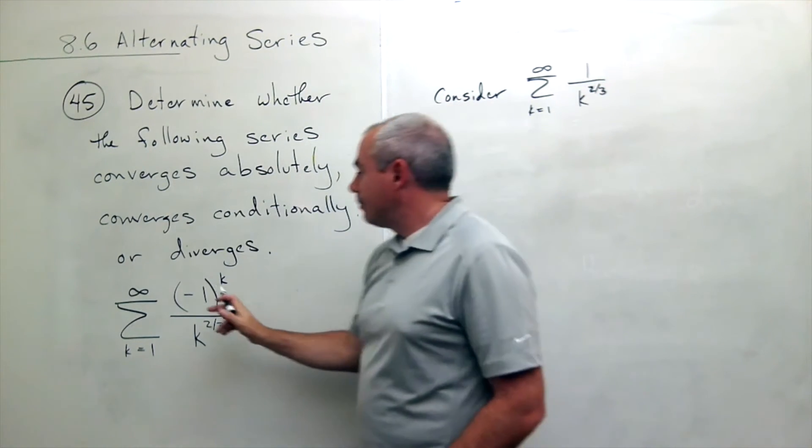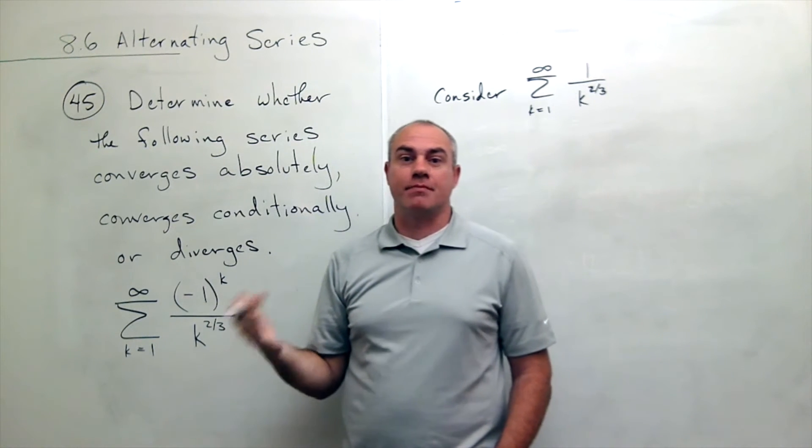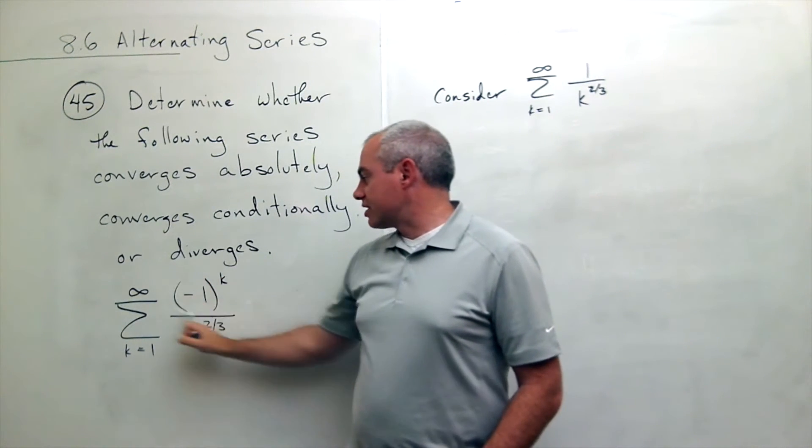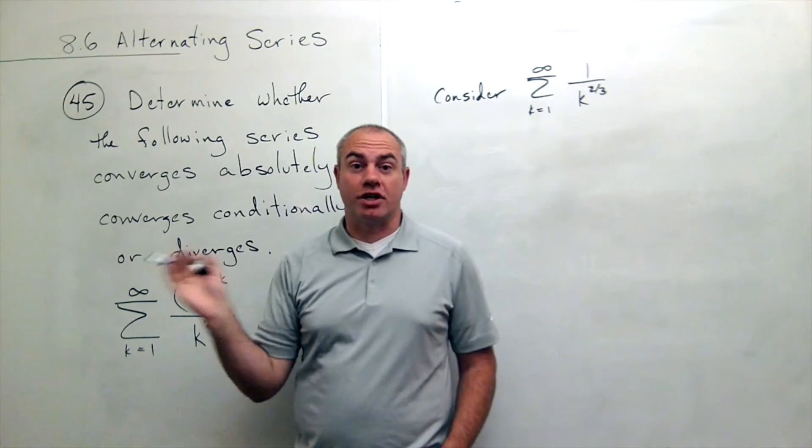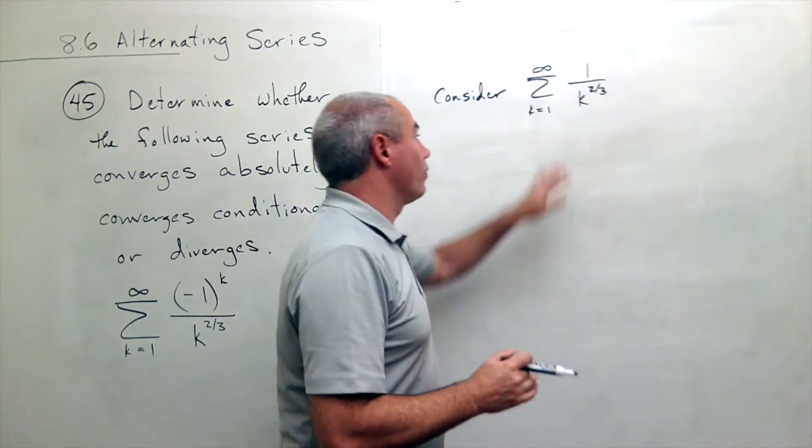Now why 1? Because I just took out all the negative signs and made them all positive. In other words, this negative 1 to the k, just ignore it for a second. And what if I had this guy?